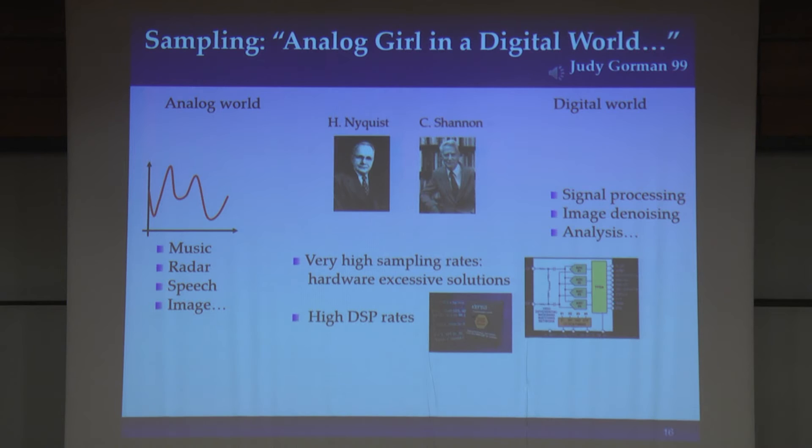The first is that today we try to accommodate wider and wider signals, which means we have to sample at higher and higher rates. Sampling at high rates means we have to use very excessive hardware solutions — this is hard to develop, it consumes a lot of power, and it consumes a lot of space. So this is one of the limitations.